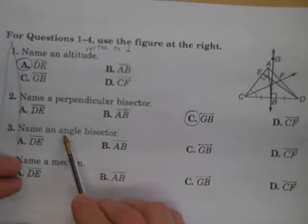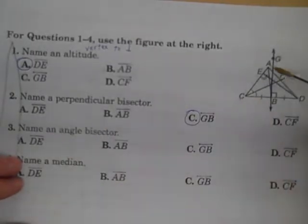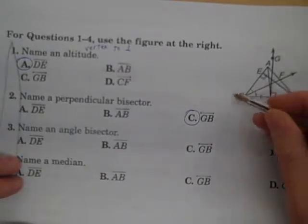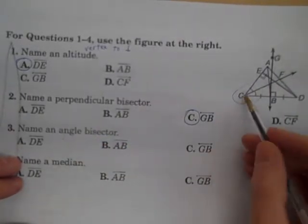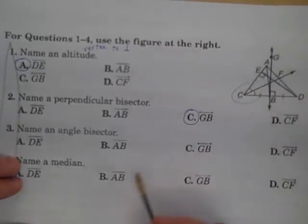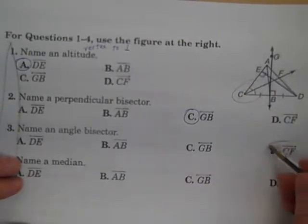Number three, name an angle bisector. So one of these angles, it's not marked here, it's not marked here, it is marked here. So an angle bisector, angle C is being bisected by CF, and that's ray CF.